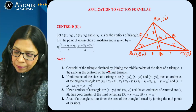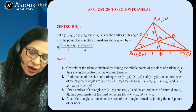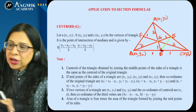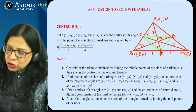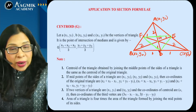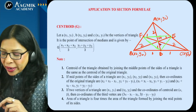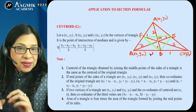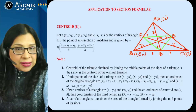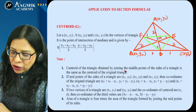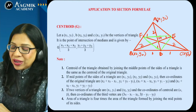An important result: the centroid of the triangle formed by joining midpoints D, E, F is the same as the centroid of the original triangle ABC. So if midpoints are given and you need the centroid of ABC, just find the centroid of triangle DEF directly — no need to find vertices A, B, C first.